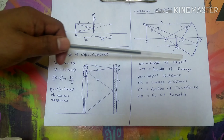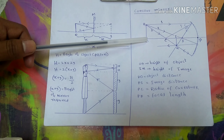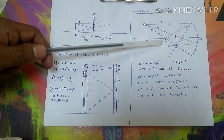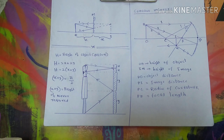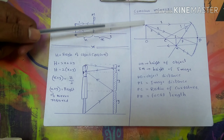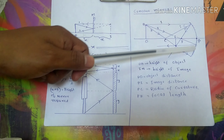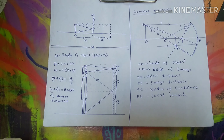So OB is the height of the object and IM is the height of the image. The object distance is PO (from pole to object), the image distance is PI (from pole to image), PC is the radius of curvature, and PF is the focal length. The image formed by the concave mirror is inverted — the object was upright but the image is upside down — and the size is also reduced. When standing in front of a concave mirror you may appear upside down, enlarged, or diminished, which is why we don't purchase concave mirrors for everyday use.